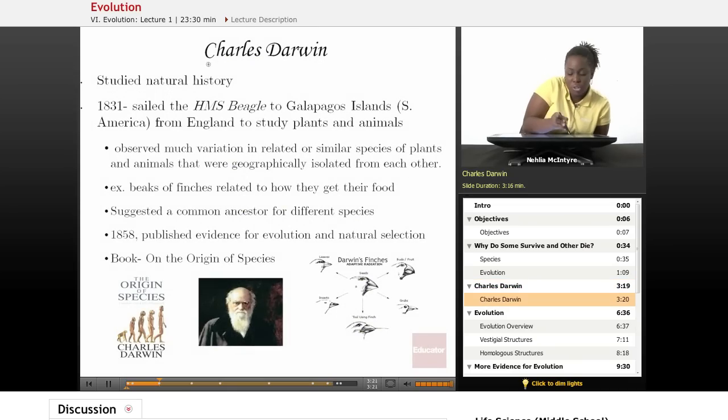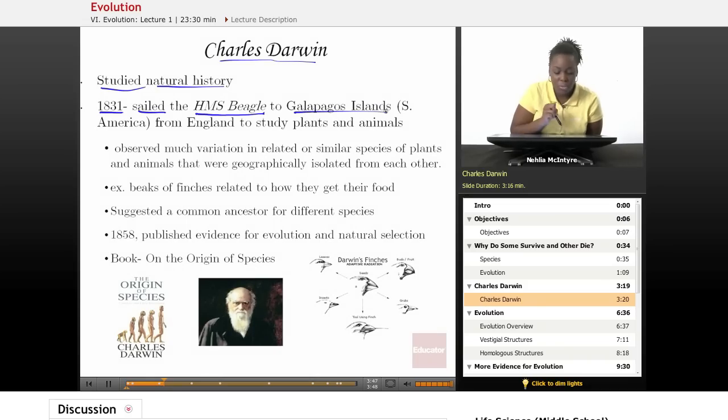So let's talk about Charles Darwin. Who was he and why is he important when we're discussing evolution? Charles Darwin studied natural history. He was a scientist. And he is known for developing the theory of evolution. He is best known for the fact that in 1831, he sailed the HMS Beagle to the Galapagos Islands, which are islands off of the mainland of South America. He went there to study plants and animals.